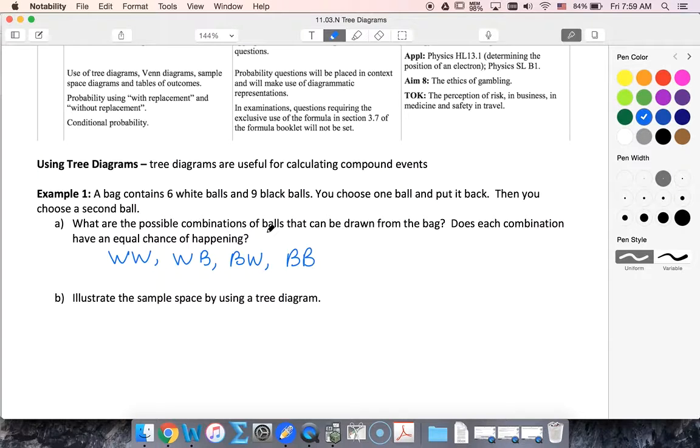Do they have an equal chance of happening? Well they don't because there's more black than there are white so I'm more likely to draw a black. So no, there are not an equal number of colors.